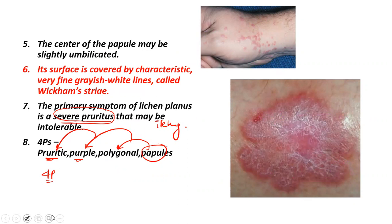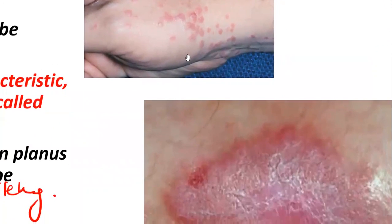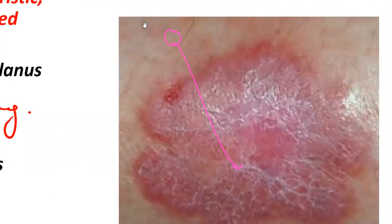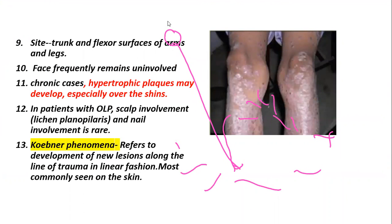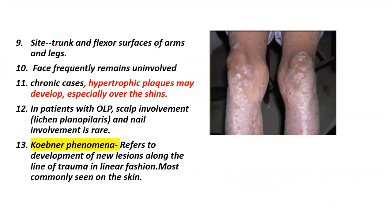If you zoom into any one of these papules, you would see grayish-white lines radiating into the lesion. This is classically called Wickham striae and is the pathognomonic feature of lichen planus. The most common sites of occurrence are the trunk and the flexor surfaces of the arms, legs, and wrists. The face remains uninvolved, and in chronic cases, hypertrophic plaques may be seen on the shins. Scalp and nail involvement is rare.